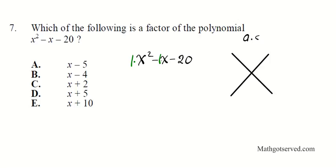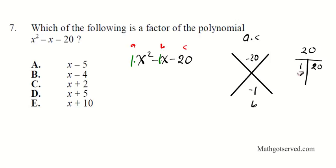We need two numbers that multiply to negative 20 and add to negative 1. Making a list: 1 times 20, 2 times 10, and 4 times 5. Testing: 1 and 20 give 21 or 19 — no good. 2 and 10 give 12 or 8 — no good. 4 and 5 give 9 or 1 — perfect, that's what we want. Since the sum is negative, the bigger number must be negative, so we use positive 4 and negative 5.